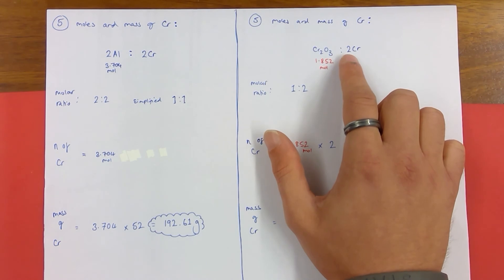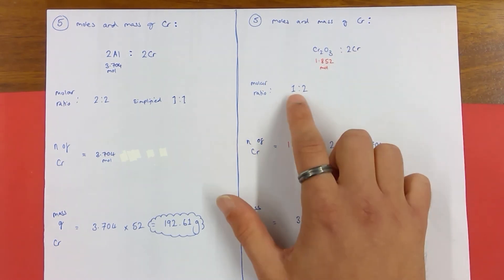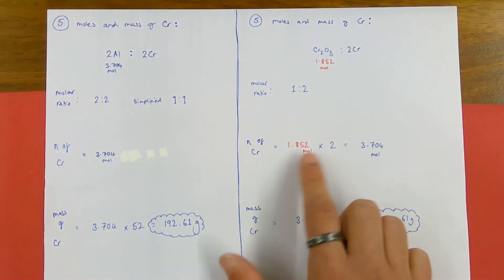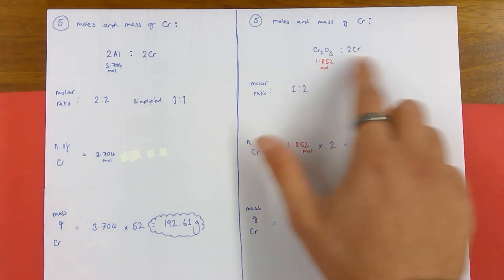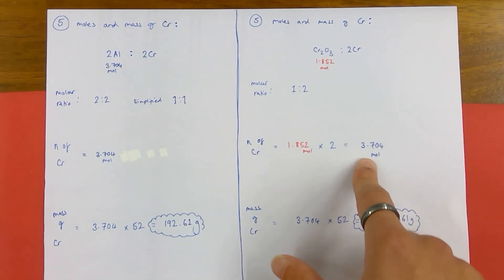Now, it's a 1:2 ratio of chromium three oxide to chromium. So I've written that here. So to work out how many moles of chromium I should form, it's 1.852 times 2 to follow the molar ratio. And look at that, it's telling me I've got 3.704 moles, exactly the same as the other method. And it should be because that's how the mole works. It's a quantity to help us do these sorts of calculations.